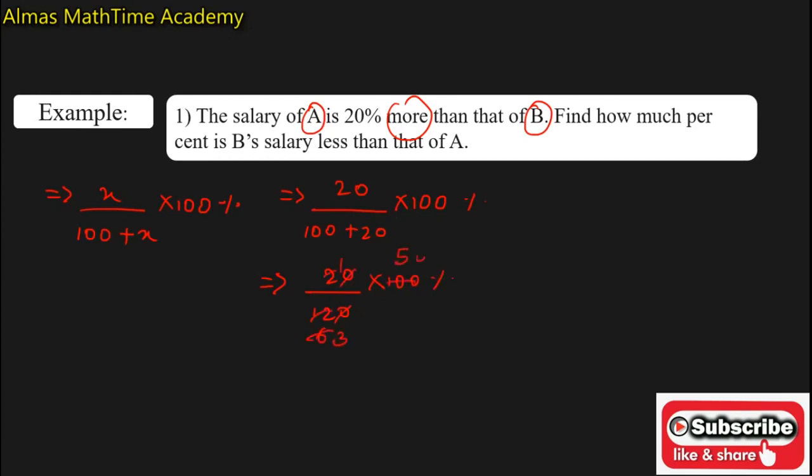The answer is 50 upon 3 percent. This can also be written as 16 and 2 by 3 percent, or in the decimal form it is 16.67 percent.